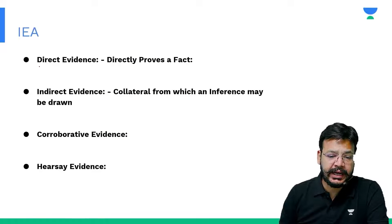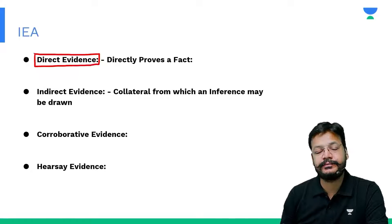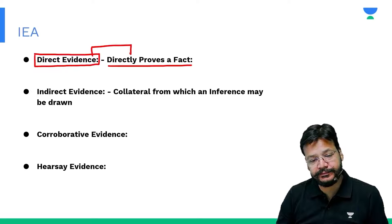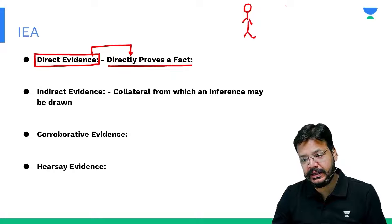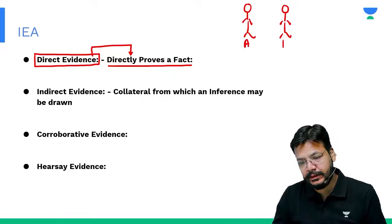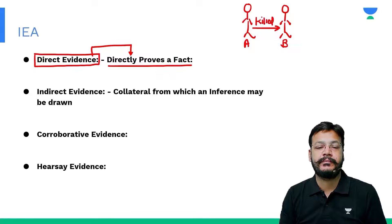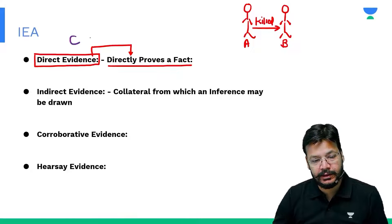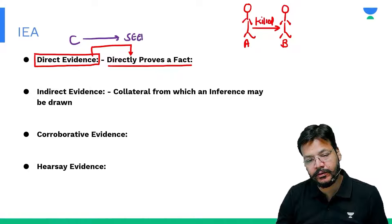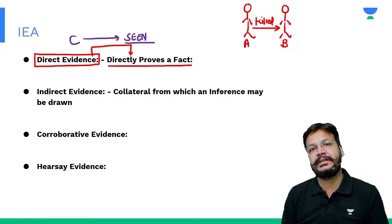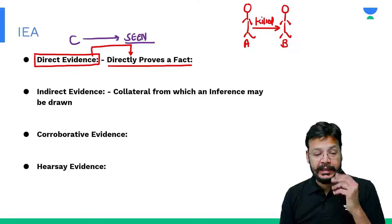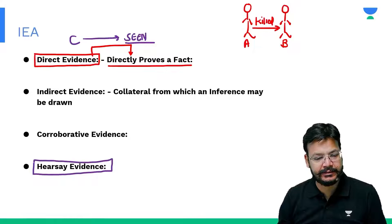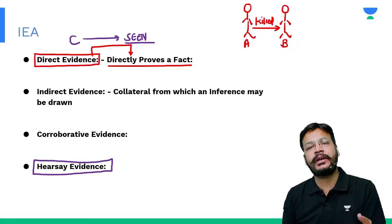Now coming to a few types of evidences. My first evidence is direct evidence. Direct evidence directly proves the fact. A very simple example: if A stabbed or killed B, and you have directly seen that incident or crime, you are a direct evidence.